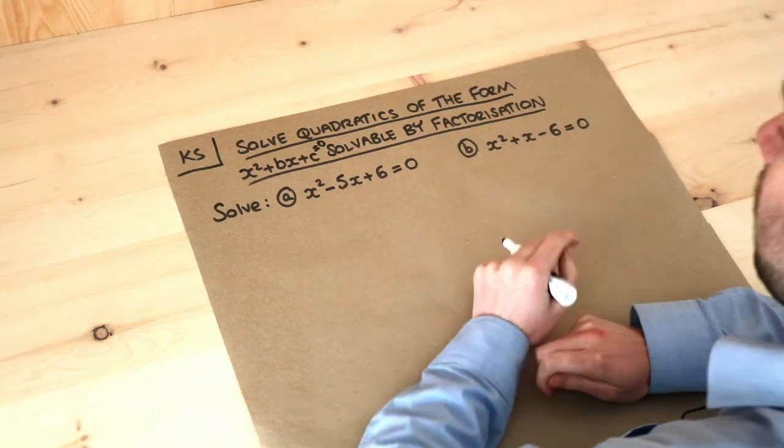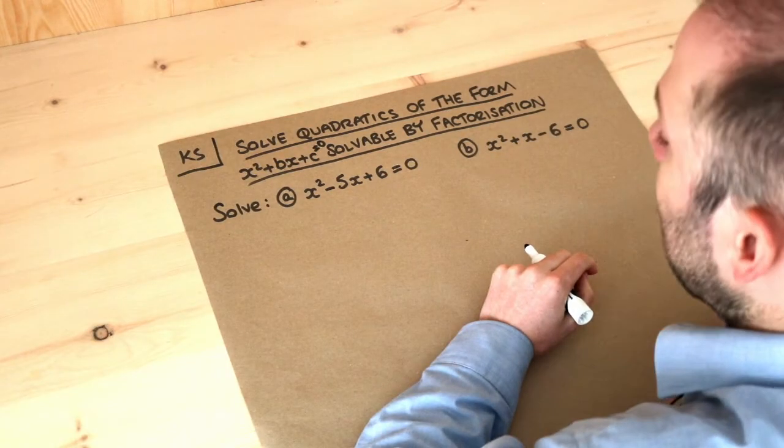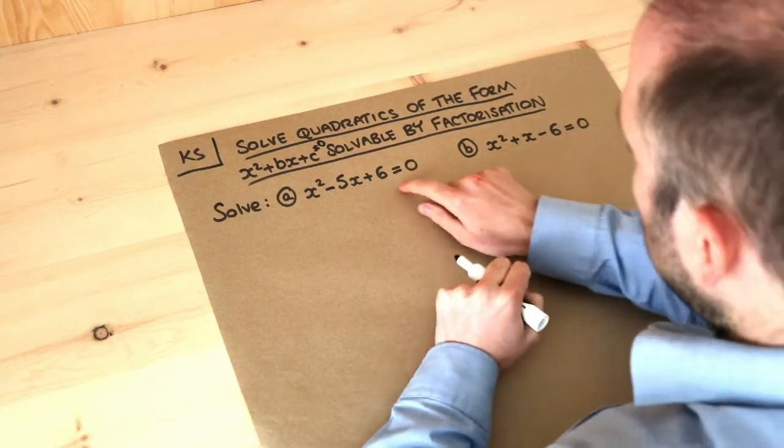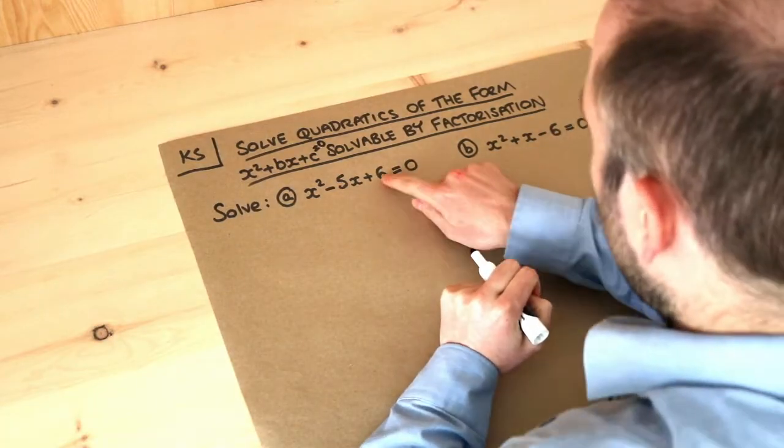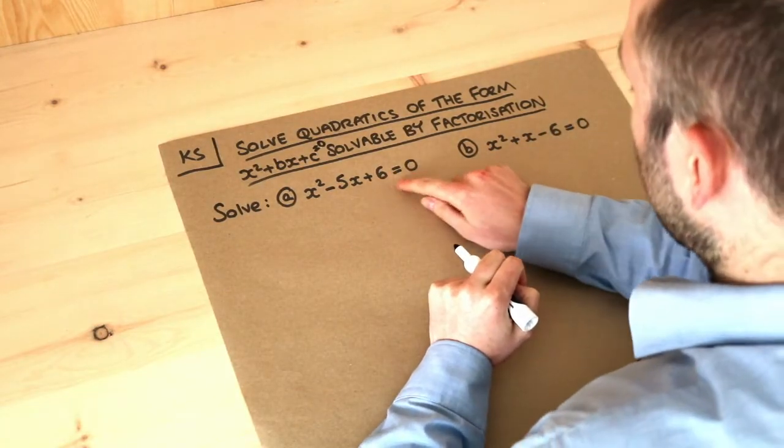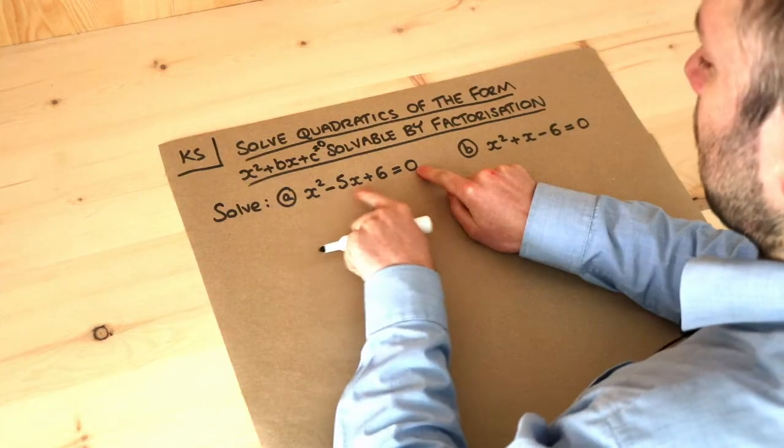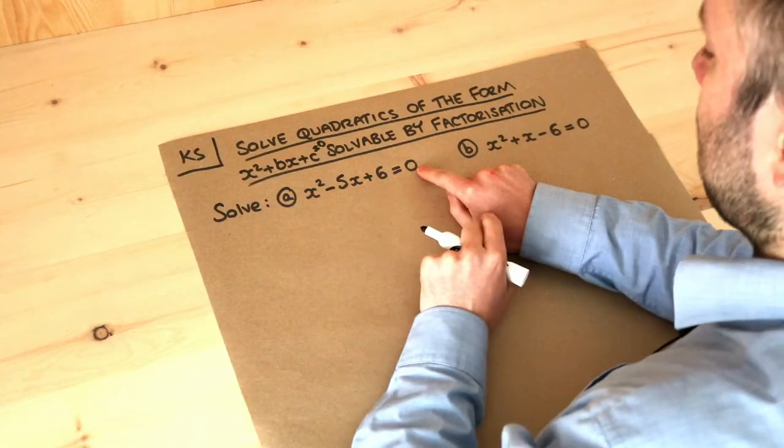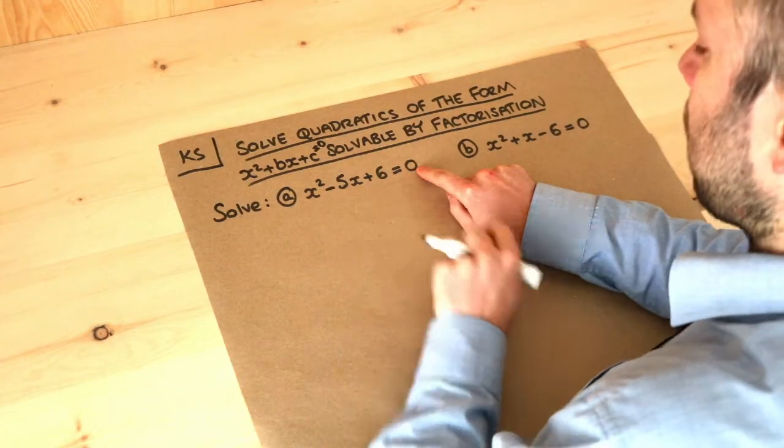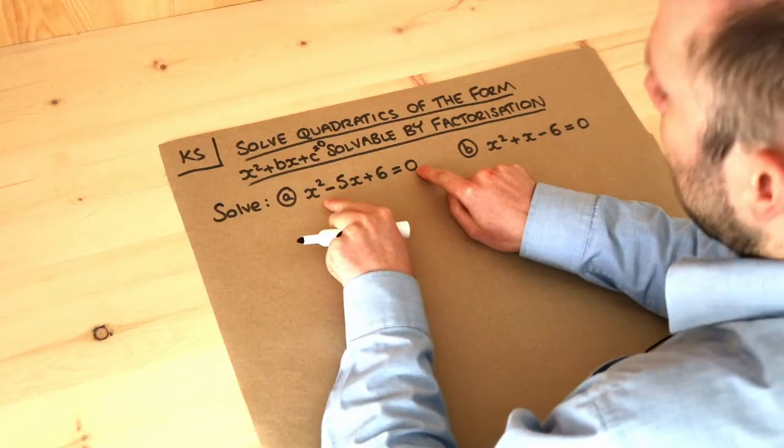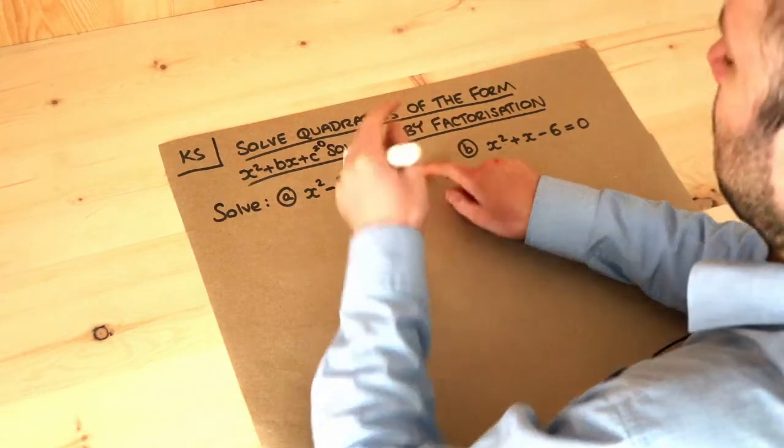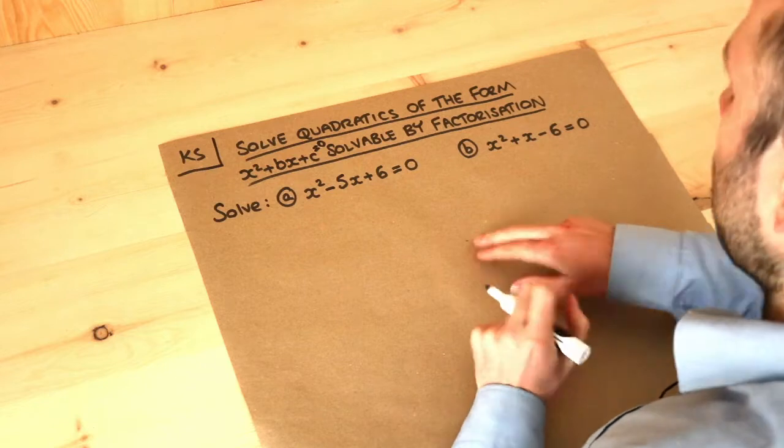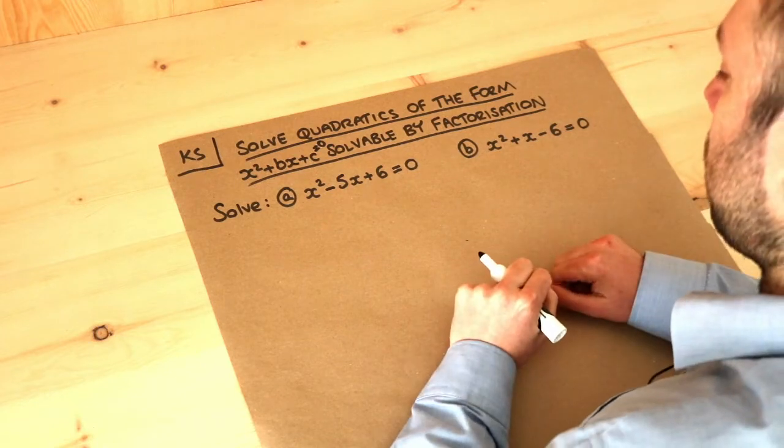So we want to solve these two equations here. Now a mistake I often see students make is that they attempt to solve this by moving the six to the other side. So they subtract six from both sides, so they say x squared minus five x equals minus six, and then they try and factorize the x out. They say x brackets x minus five equals minus six and they get stuck. That's not the method you want to use.